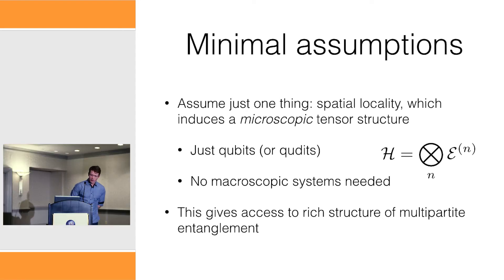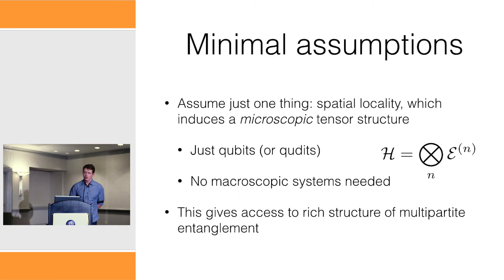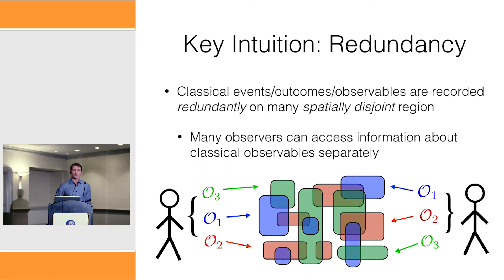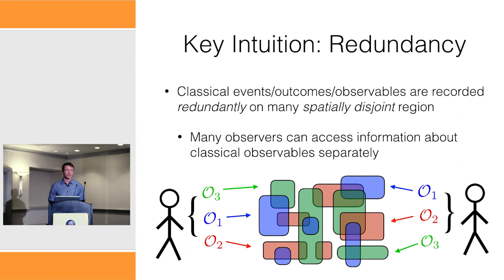The key intuition that my approach is based on comes from the pioneering work of Wojciech Zurek and quantum Darwinism. The key idea is redundancy: the things we call classical objective events are recorded redundantly in many spatially disjoint regions. This seems to be one aspect of things we consider classical and objective, and the evidence suggests it may surprisingly be pretty much all you need to classify it fully.